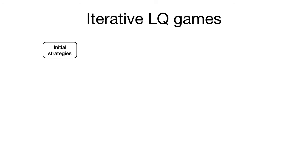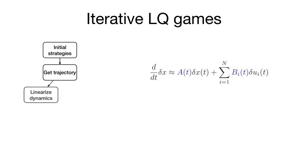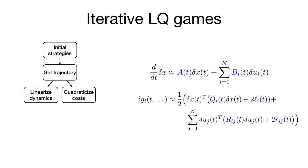Our algorithm mitigates this challenge by solving a sequence of local approximations to the original game. Our algorithm proceeds as follows. Starting with some initial strategy for each player, we integrate the dynamics forward to find the corresponding trajectory. Next, we linearize the dynamics about this trajectory and form a quadratic approximation of each player's running cost. Thus equipped with linear dynamics and quadratic costs, we solve the resulting linear quadratic game with coupled Riccati equations. These equations admit an analytic solution via a dynamic program.